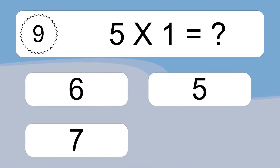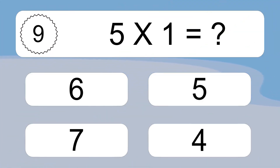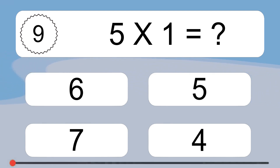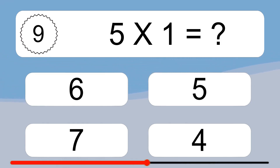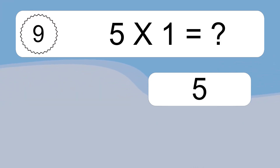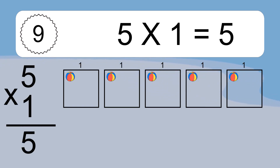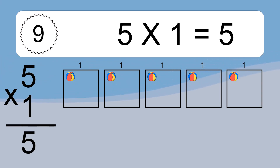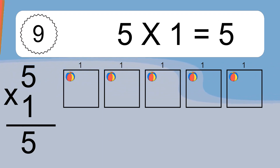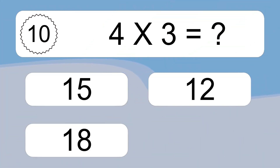5 times 1 equals what? 5 times 1 equals 5. We have 5 boxes and each box has 1 colorful ball inside. If you count all the balls in all the boxes together, you will have 5 times 1 balls. This equals 5 balls.